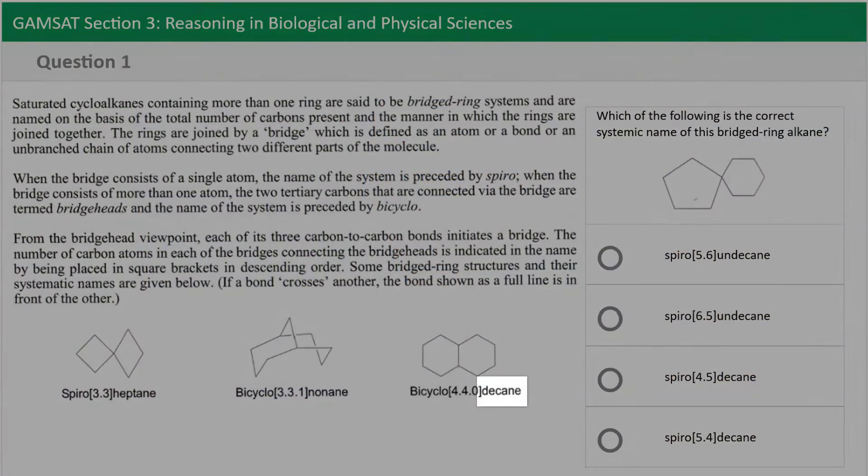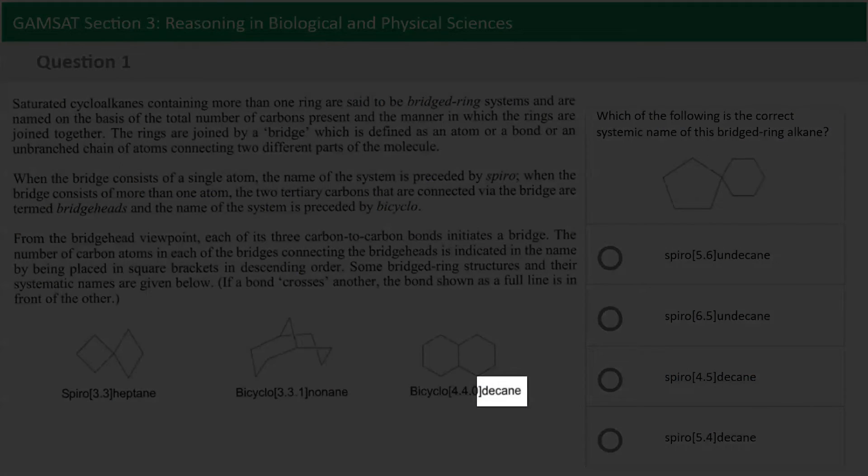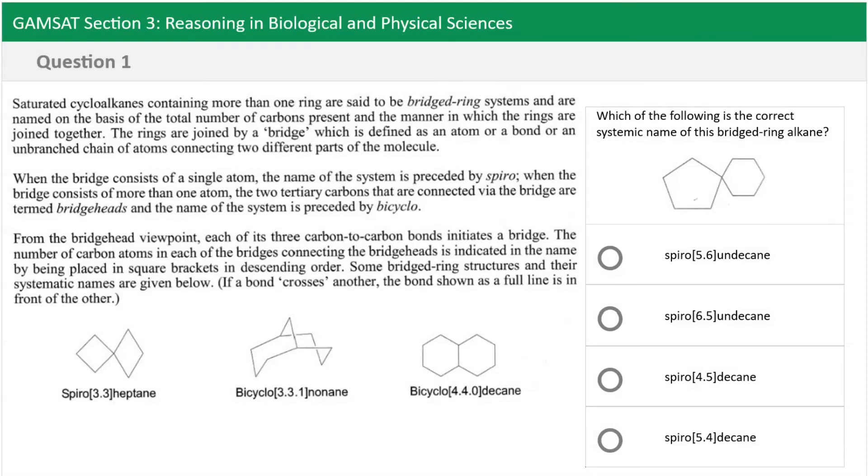Now if you already have some familiarity with IUPAC naming even very basic you'll probably recognize decane. And even if you didn't we can see that there's an example provided. And the prefixes of dec and also undec are referring to the number of carbons. And we can kind of check this.